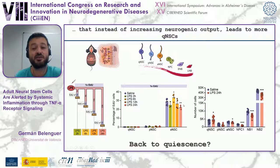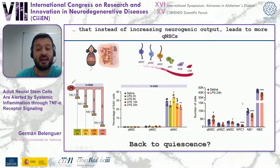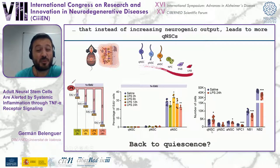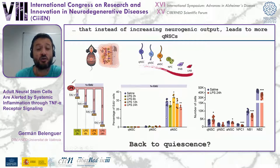Interestingly, this transient activation did not result in higher production of new neurogenic cells. Instead, the opposite was observed: less production at later stages of the neurogenic progression — fewer progenitors and fewer neuroblasts — while the number of quiescent stem cells increased. These quiescent cells do not proliferate at all, not even after inflammation starts. We wondered whether this transient activation could be coupled to a mechanism of returning to quiescence.